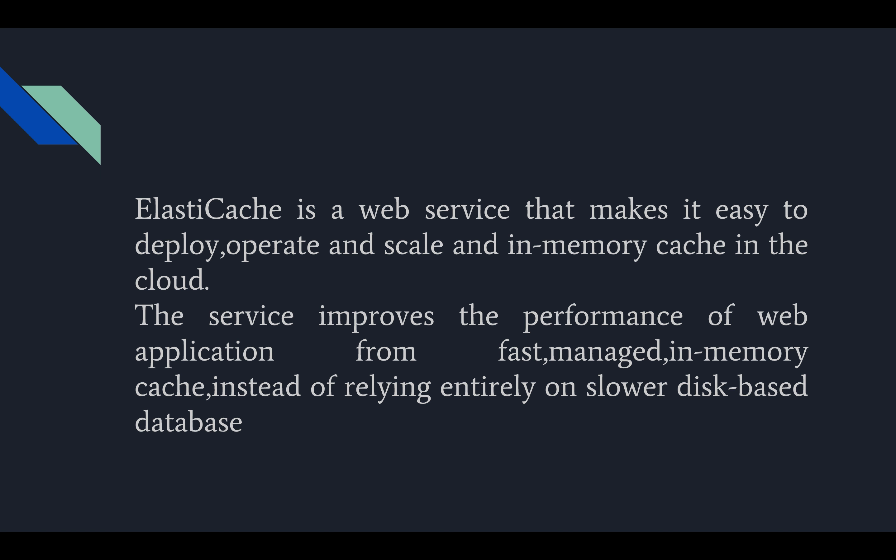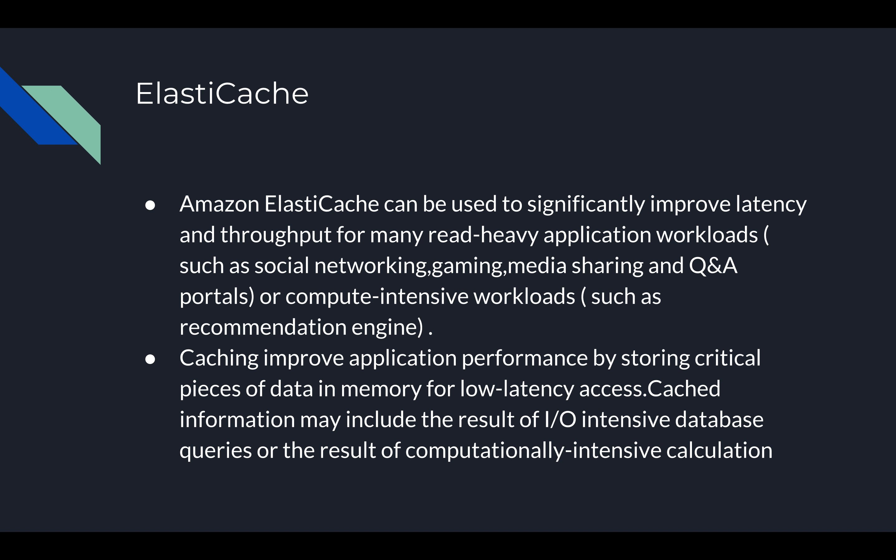Amazon ElastiCache can be used to significantly improve latency and throughput for many read-heavy application workloads such as social networking, gaming, media sharing, and question-and-answer portals, or compute-intensive workloads such as a recommendation engine. It is used for many different types of applications.